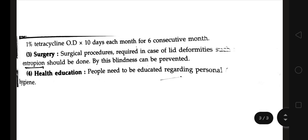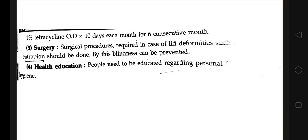Health education is essential: people need to be educated regarding personal and environmental hygiene. If personal and environmental hygiene is maintained properly, the disease will not spread and fly populations will not increase, so the transmission of the agent can be prevented. That concludes the topic of trachoma.